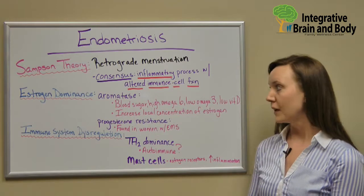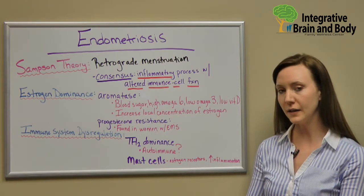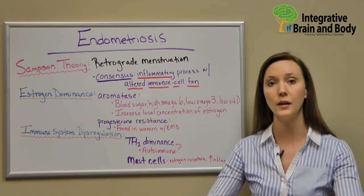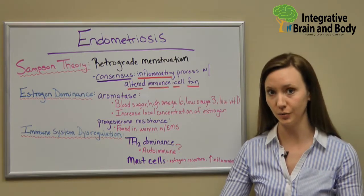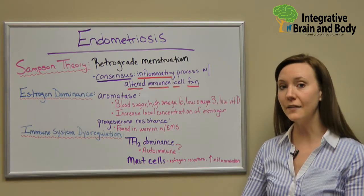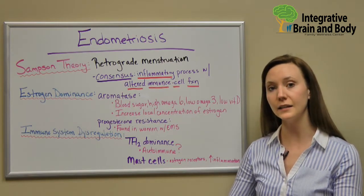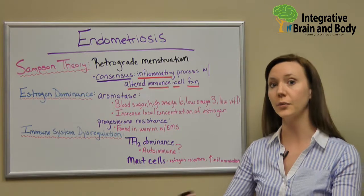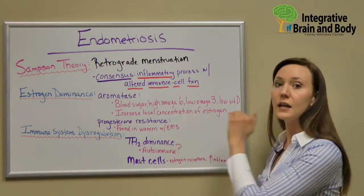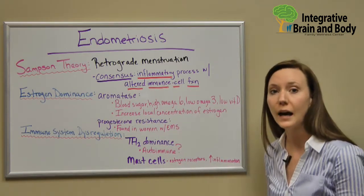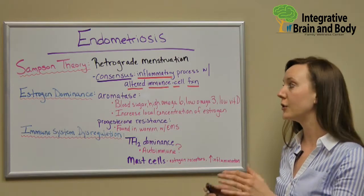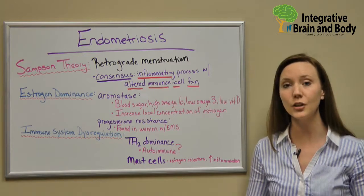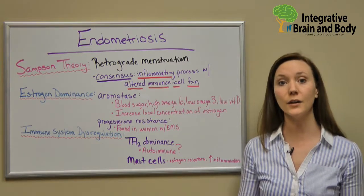Omega-6s help with the production of a very inflammatory component called prostaglandin E2. When we have enough omega-3s, that gets shut down — those inflammatory pathways aren't present. But when we have high omega-6 and low omega-3, we get high prostaglandin E2, which actually stimulates the production of aromatase. So we need to make sure that we have an appropriate amount of omega-3s.